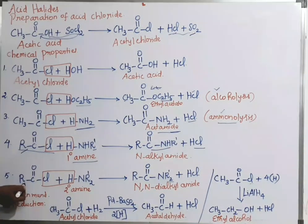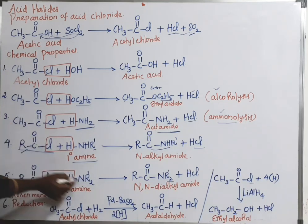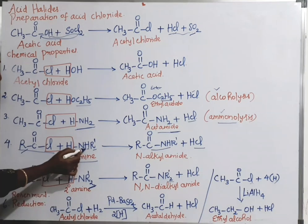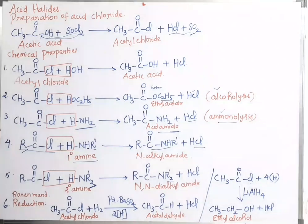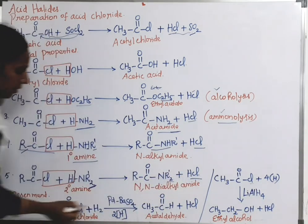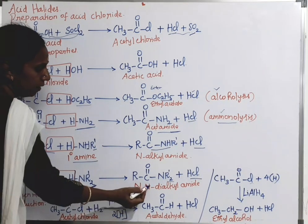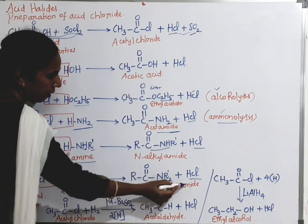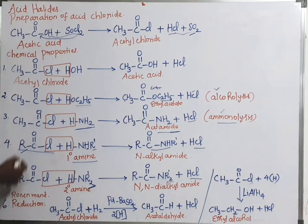The same acid chloride reacts with secondary amine (R2NH), which has two alkyl groups — one hydrogen replaced by another alkyl group. Here also HCl is removed. The remaining part is RCONR2, which is called N,N-dialkyl amide. This is another chemical property of acid chloride.